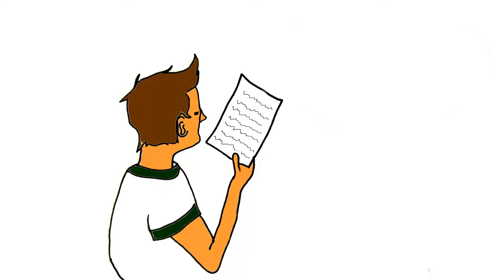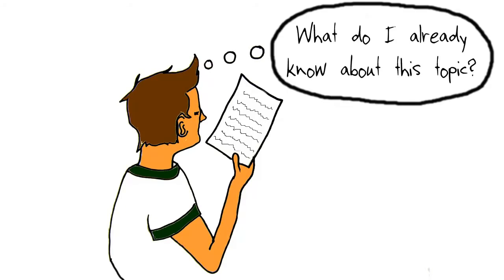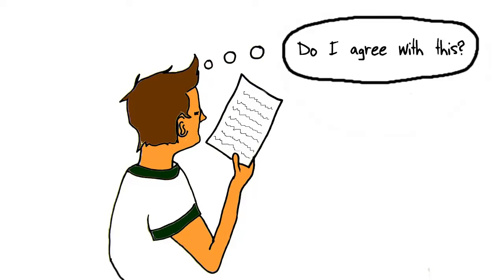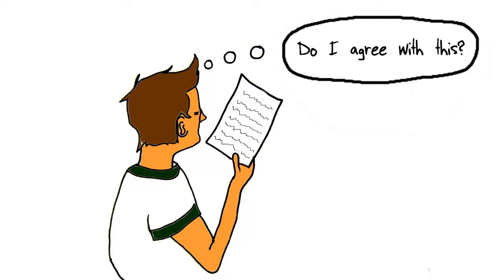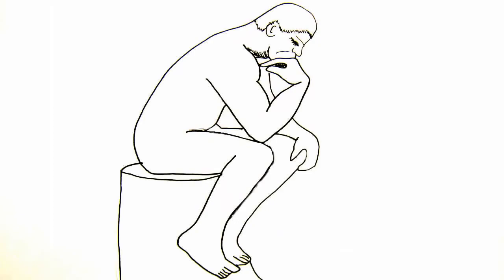While you're reading any article, ask yourself these questions: What specific topic is the researcher studying? What is already known about this topic? Do you agree with what the author is saying? Does what the author says agree with other information you have found on this topic? Finding answers to these questions will improve your comprehension of the article and help you to think critically about the topic.